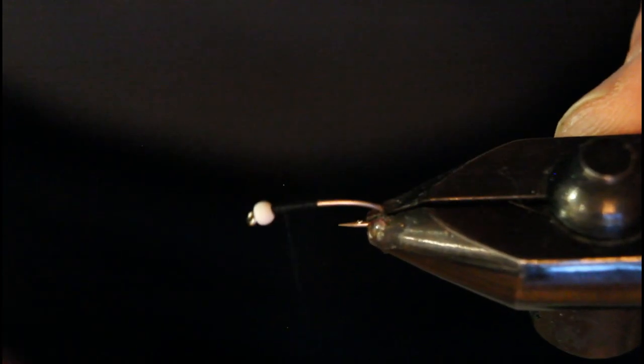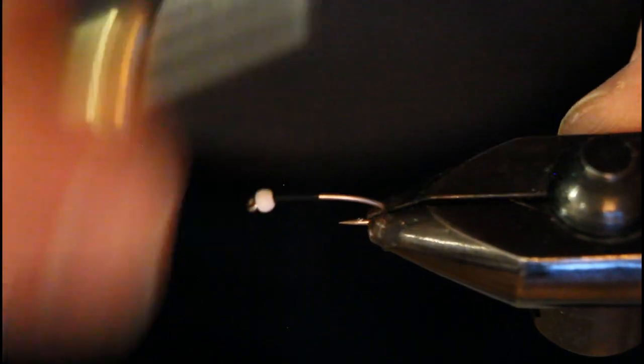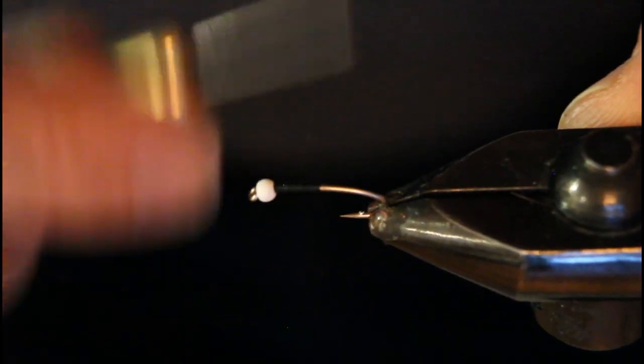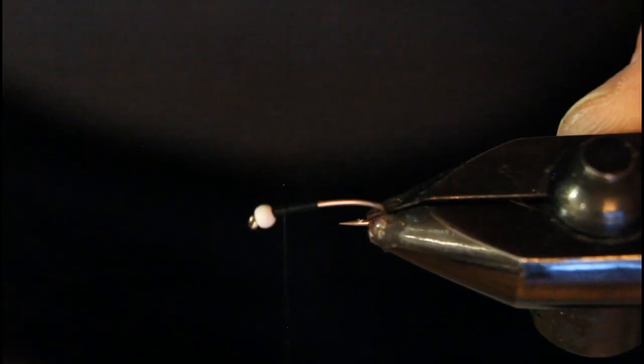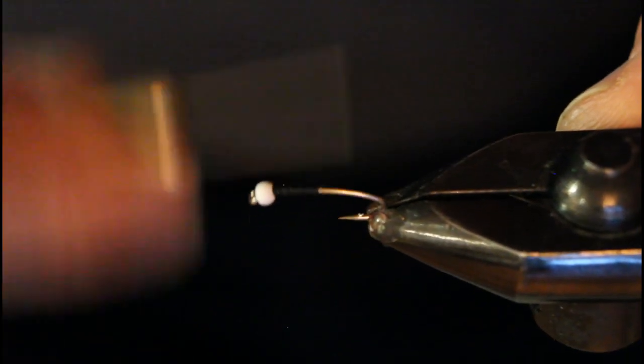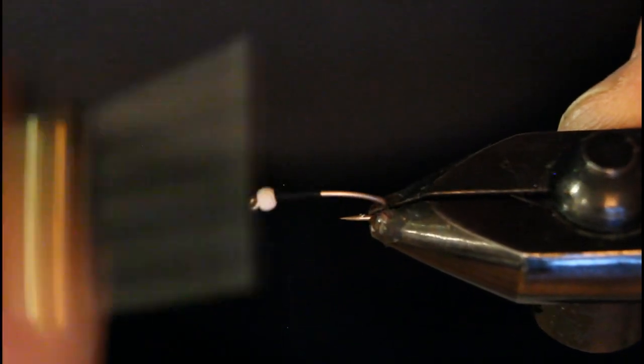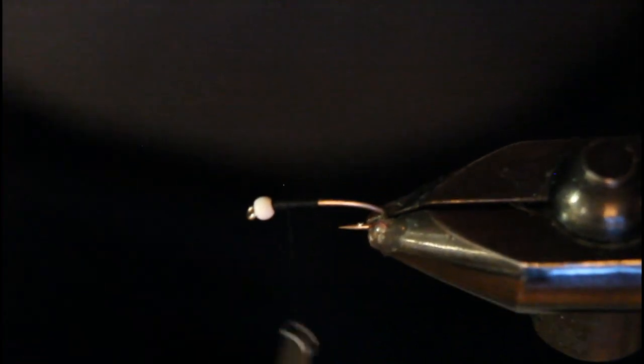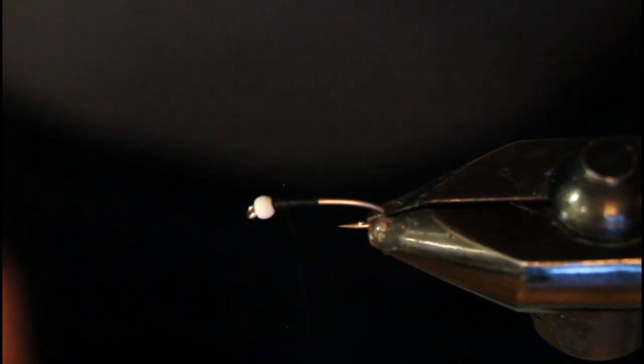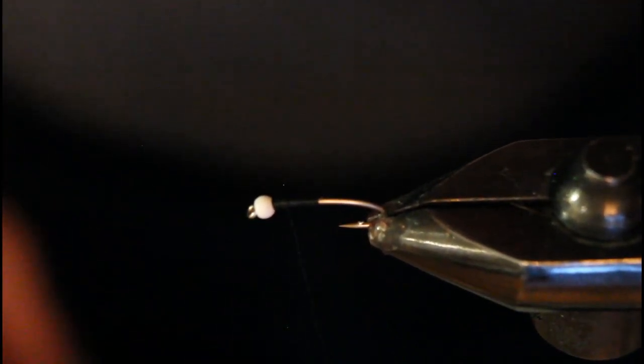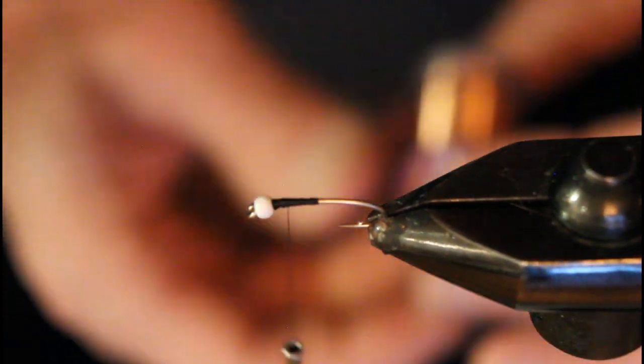It also does a decent job in those murky waters of representing the gills, the white filaments at the head of a chironomid pupa. So the white bead is the choice of the day. Now we've built up a bit of a taper there, and our next order is to put in some fine, extra small copper wire in the natural color. That's going to form the ribbing on our fly.